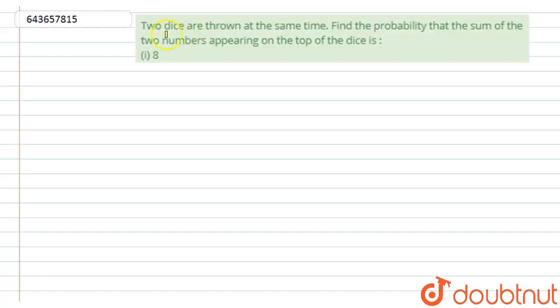Hello student, let us start with the question. Here we have given two dice are thrown at the same time. Find the probability that the sum of the two numbers appearing on the top of the dice is 8.